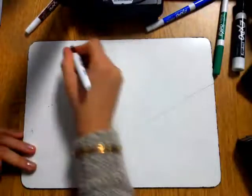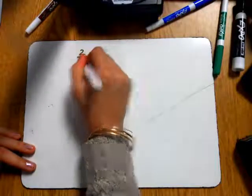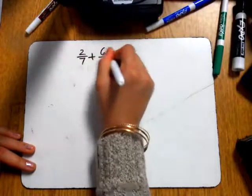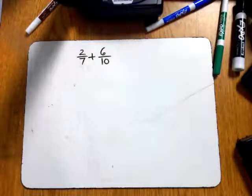So the problem we're doing is 2/7 plus 6/10. I am going to first show the standard algorithm without the models, and then I will show the one with the models.